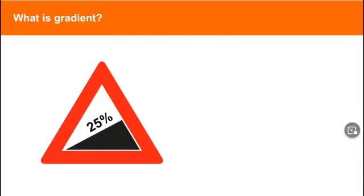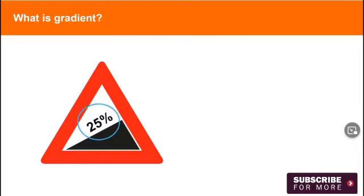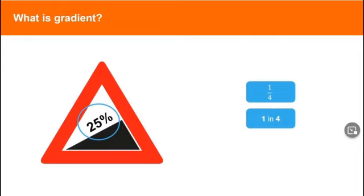Look at this road sign. It tells road users the gradient of the road ahead. 25% is the same as one quarter. So we say this gradient is one in four.